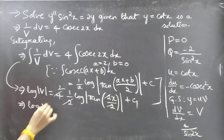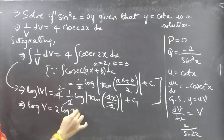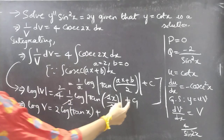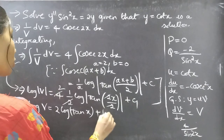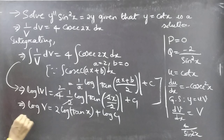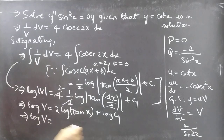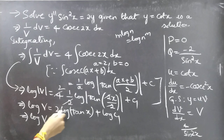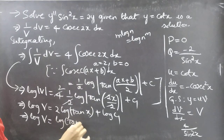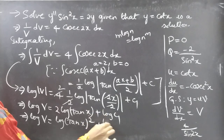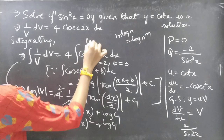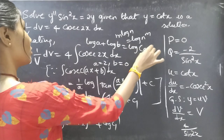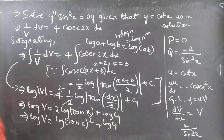We can write this as log V = 2 log tan x + log C₁. Using the logarithm rule m·log n = log(nᵐ), we write 2 log tan x = log(tan²x). Then using log a + log b = log(ab), we get log V = log(C₁ tan²x).